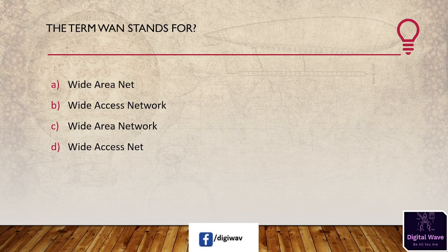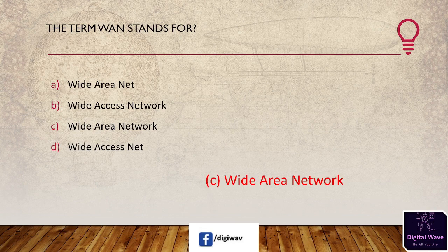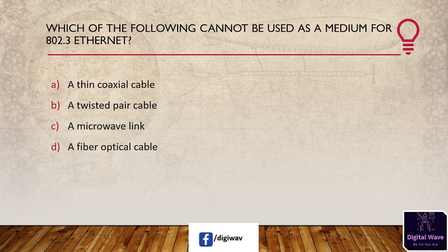Next question: the term WAN stands for? Options include wide area net, wide access network, wide area network, and wide access net. The answer is C — wide area network.